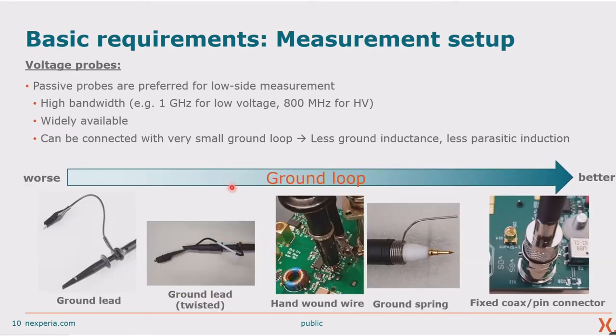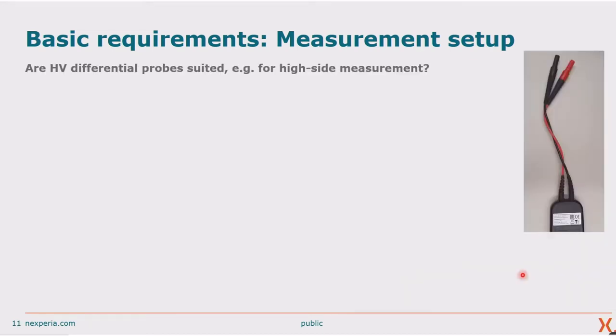If we have a look at different connection examples, we do have this classic ground lead, which is usually not usable for this. If we have to do some kind of connection like this, at least twisting it around is an option, but it's still not optimal. Better solutions are, for example, a specific hand wound wire that can be soldered onto the PCB or using the supplied ground spring. But really, the best solution will be using some kind of fixed coaxial or pin connector where we can just plug in the probe.